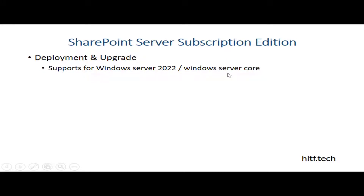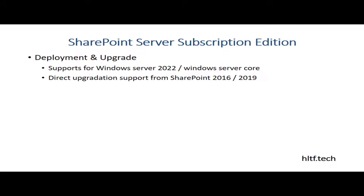On Windows Server Core, you can dedicate separate virtual or physical cores of your server to the operating system operations — that is a vast topic of core deployment we won't go into detail here. Additionally, if you have SharePoint 2016 or SharePoint 2019, you can directly upgrade from either of those environments to SharePoint Server Subscription Edition.